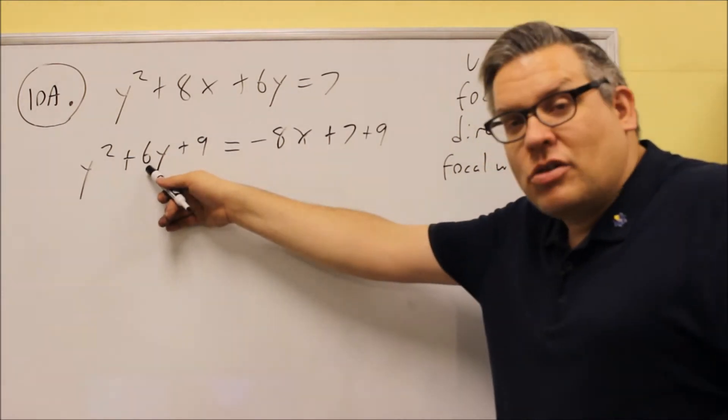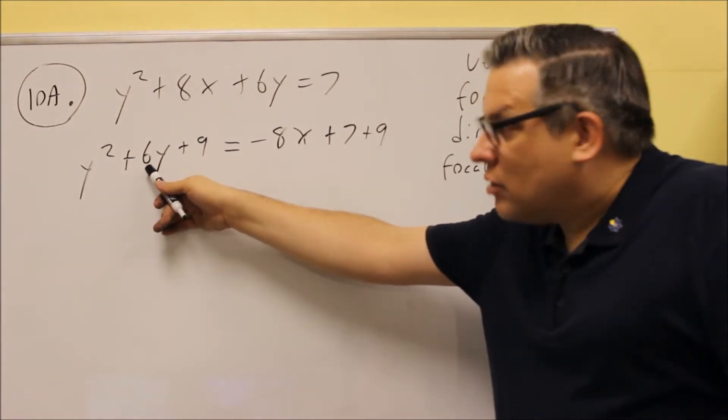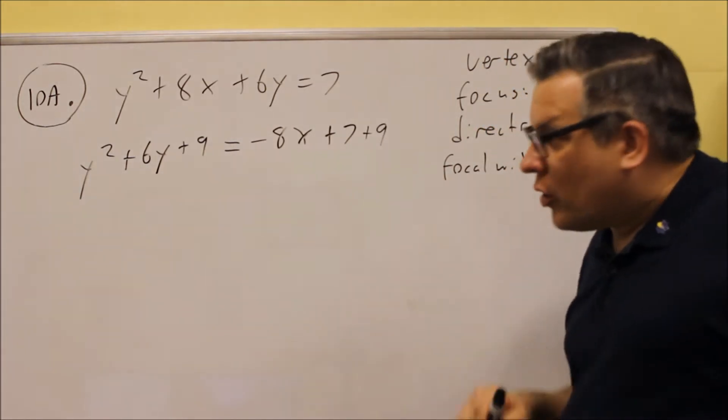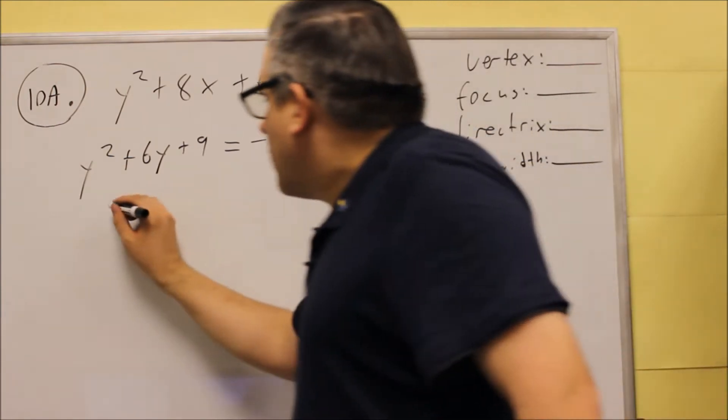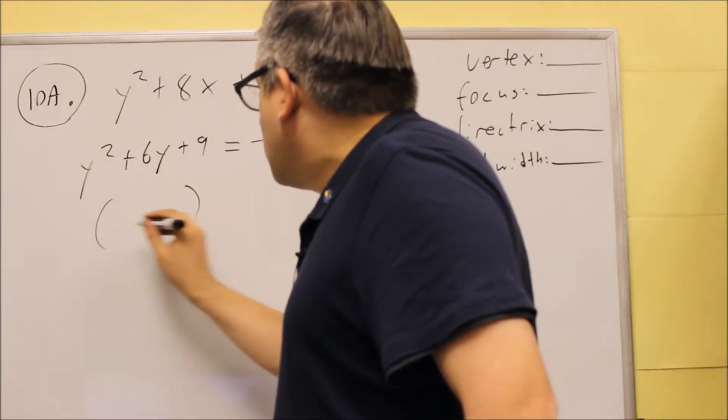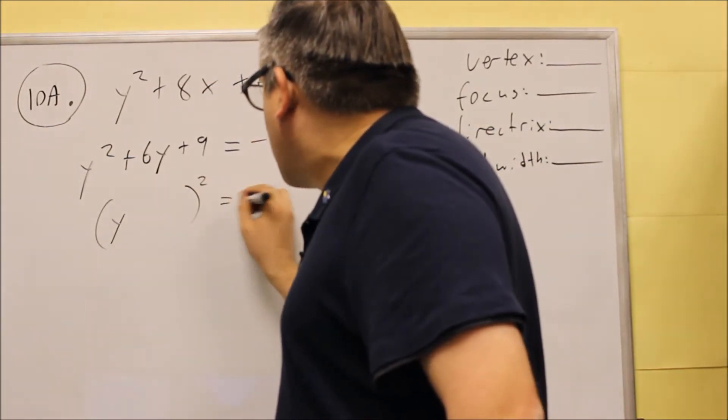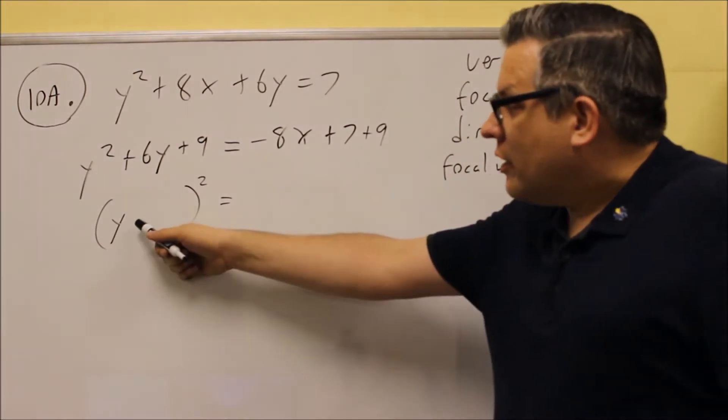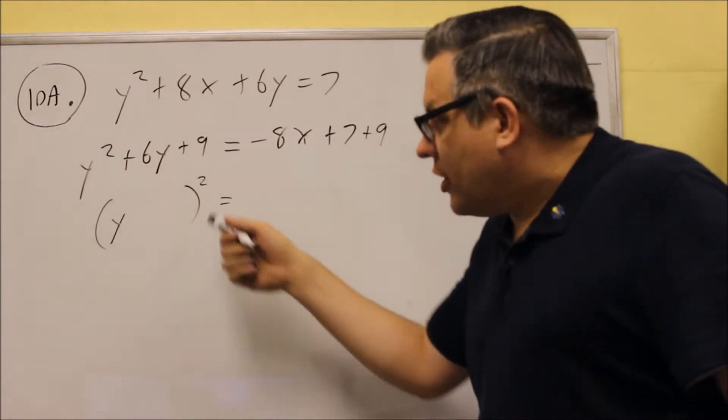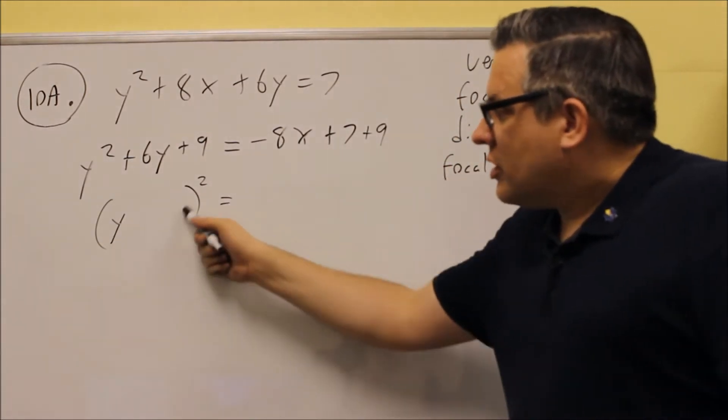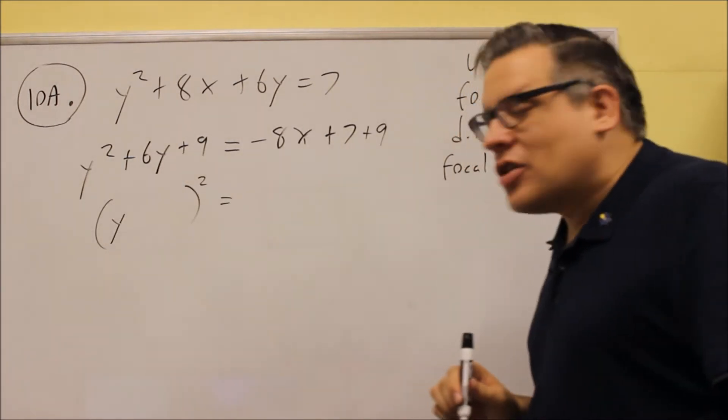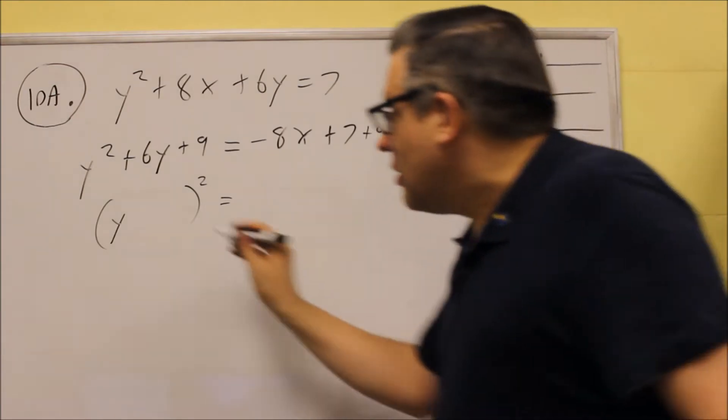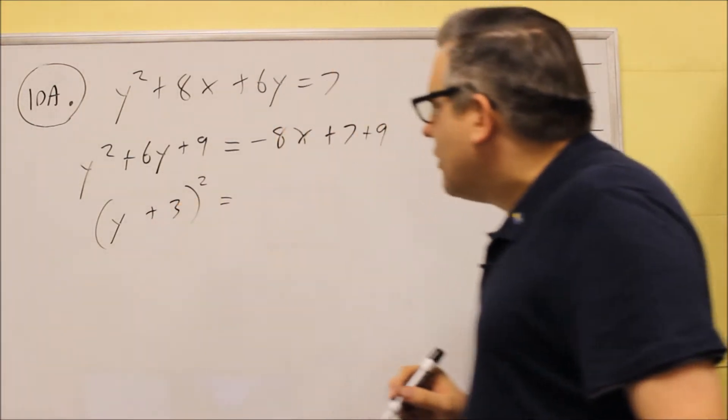Again, divide that by 2, you get 3, square it, you get 9, make sure you add it to both sides of the equation. Here, we're going to factor it. Because we did complete the square, we know it will be a y quantity inside. What goes here will be the, when I divide that by 2, so 6 divided by 2 is 3, that's plus 3 will go inside there.